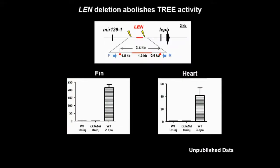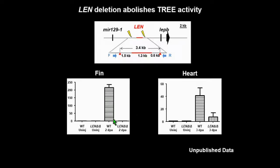To define whether this Leptin B enhancer — which we call LAN — controls endogenous Leptin B expression, we generated a Leptin B LAN deletion line using CRISPR genome editing. The target sites are 1.5 kilobases upstream and 0.6 kilobases downstream of LAN. In wild type, Leptin B transcript level is highly increased during fin and heart regeneration. But in the LAN deletion line, this increased transcript level is abolished. This data suggests that LAN is a truly bona fide TREE of Leptin B.